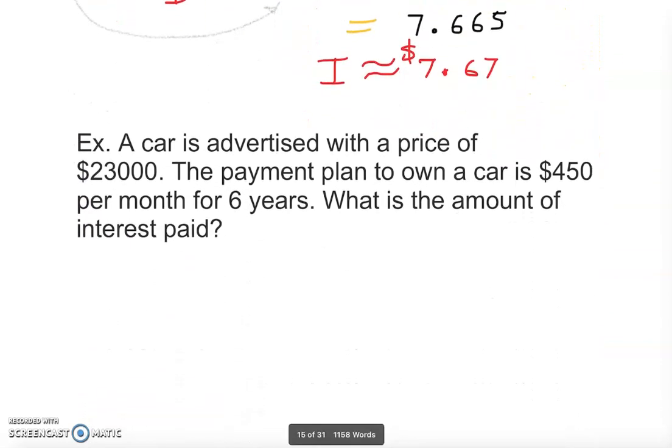Now if you look at the next problem, let's see which interest formula we can work it out with. A car is advertised with the price of - seems like we have something known about the P. The payment plan to own a car is $450 per month for six years.